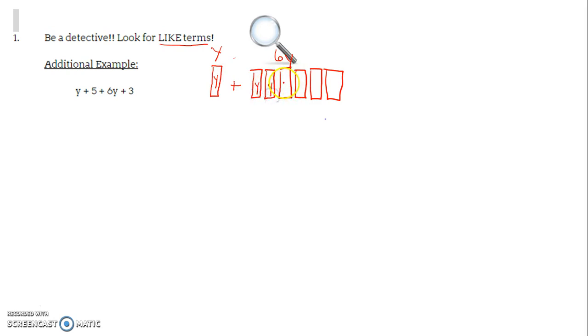Each of these rectangles represent a y. Those are like terms. Y plus 6y, those are like terms. How many y's do we now have? Well, we have 1, 2, 3, 4, 5, 6, 7 y's. So y plus 6y would be 7y.